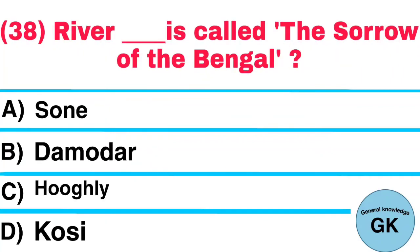Question number 38. Which river is called the Sorrow of Bengal? A. Son, B. Damodar, C. Kugli, D. Kosi. Answer: Damodar.